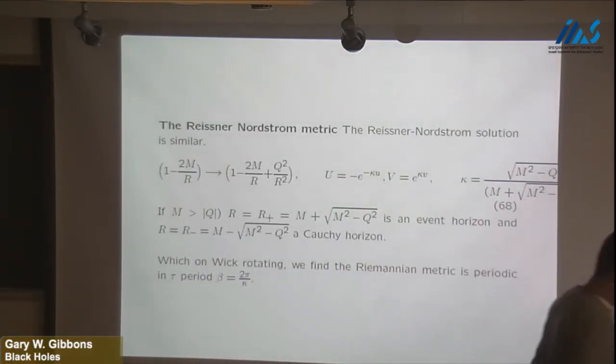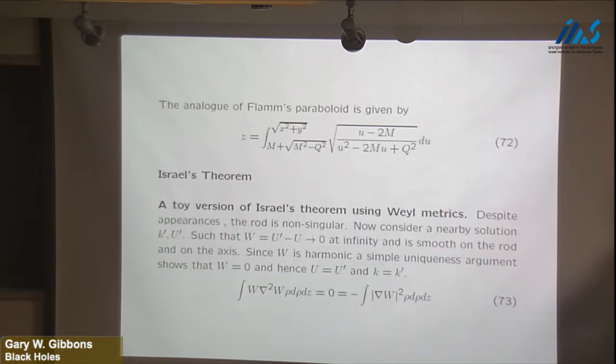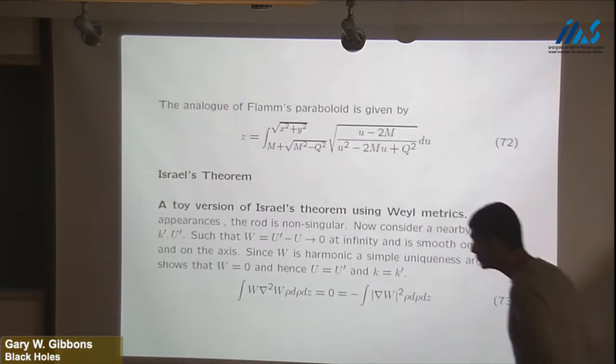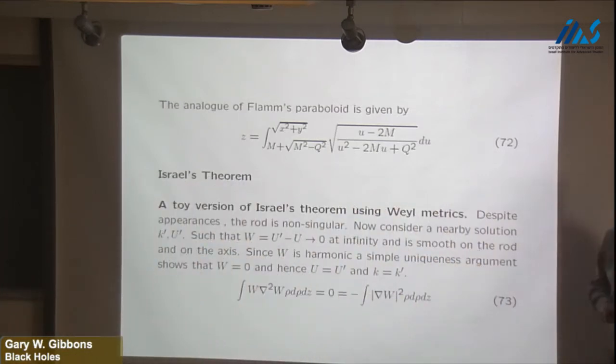If time permits, at the end, I'd like to sketch some slightly more speculative ideas. Actually, this is probably the pointer, isn't it? Is that right? Yeah. Okay, so we did the Reissner-Nordström metric, and it looks very much like what we've seen in the Schwarzschild case, except it has two horizons. Right, here we go. Has two horizons.